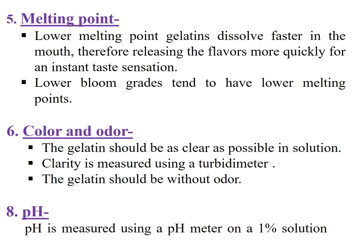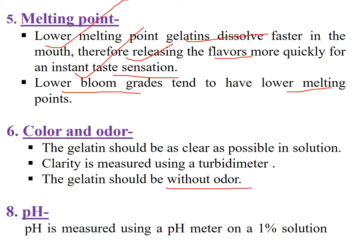Regarding melting point: if the melting point is lower, gelatin dissolves more quickly in the mouth, releasing flavors faster and giving an instant taste sensation. Lower bloom grades result in a lower melting point. Regarding color and odor: gelatin should have no odor and should always be clear. A turbidimeter is used to assess clarity of the gelatin solution. pH is measured using a pH meter on a 1% solution.